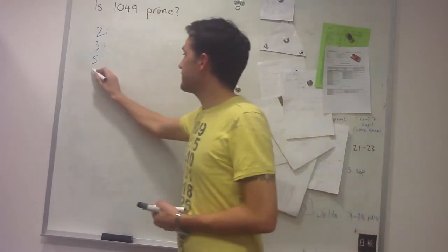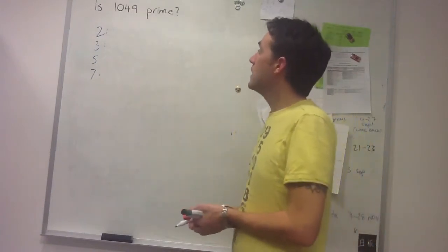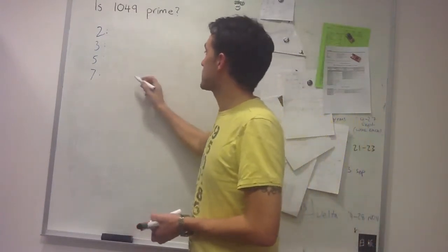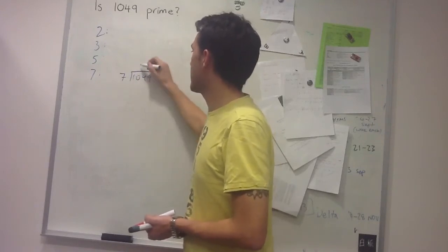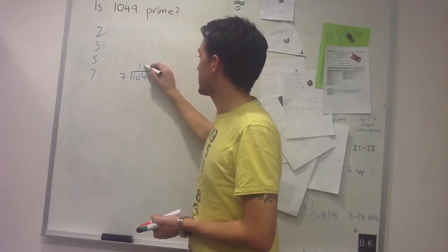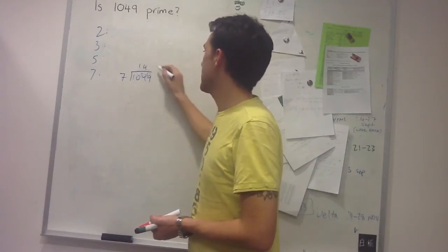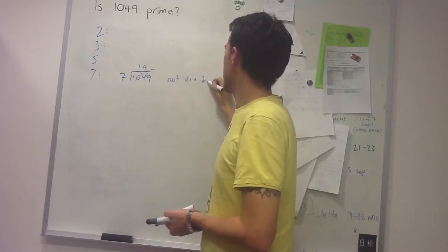Then for 7, so again I'm just going to be checking through the primes. For 7, I can just do a quick divide into 1049 and I get 1, carry the 3, and then this goes 4 times, carry the 6. And I can see at this point that it's not divisible by 7.